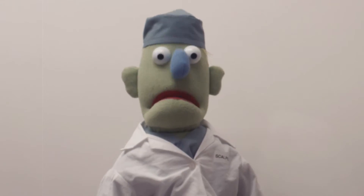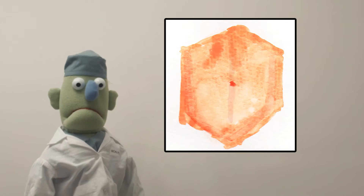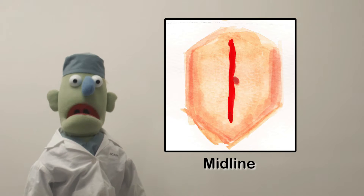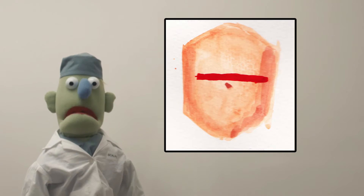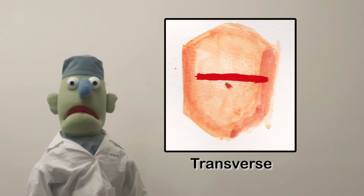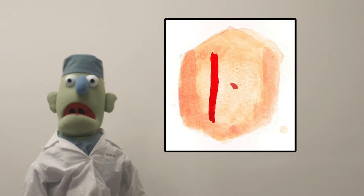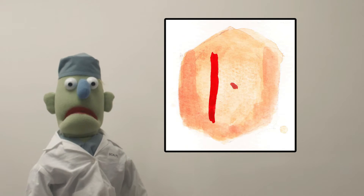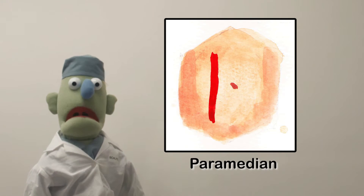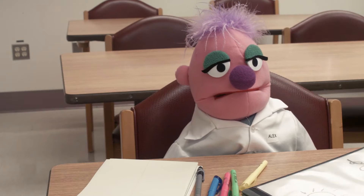Let's start with some easy ones on the abdomen. Incisions that run up and down in the middle are called midline. If your incision is side to side, that's a transverse incision. If your incision is off to one side but still up and down, that's a paramedian. We were still doing those when I was just a young Muppet.